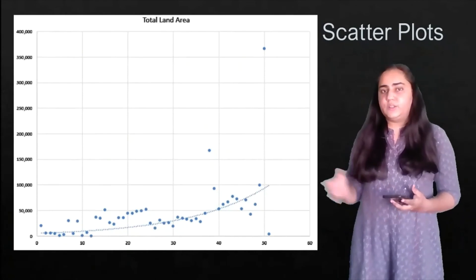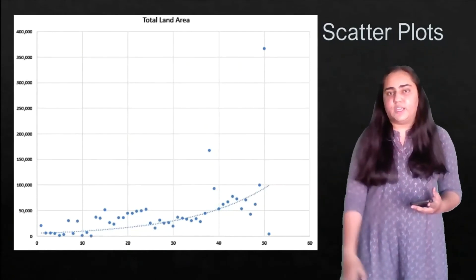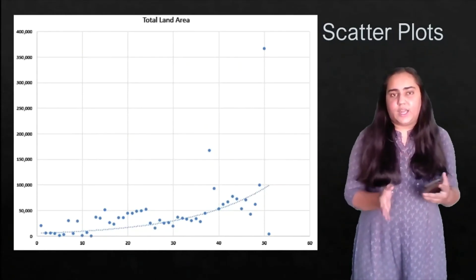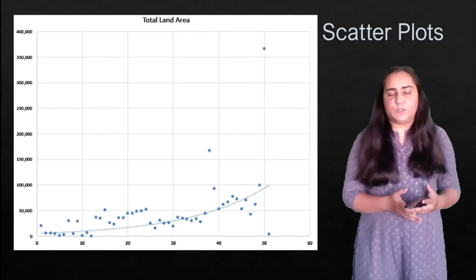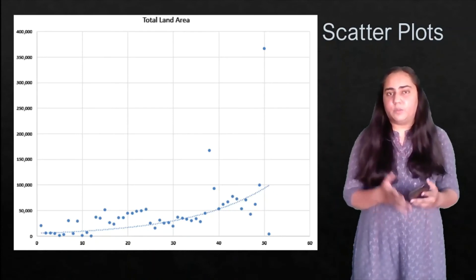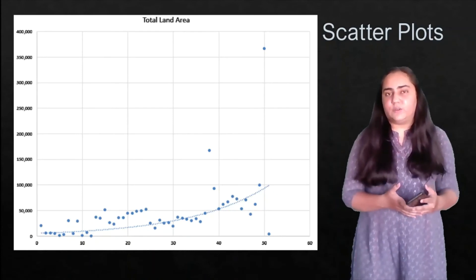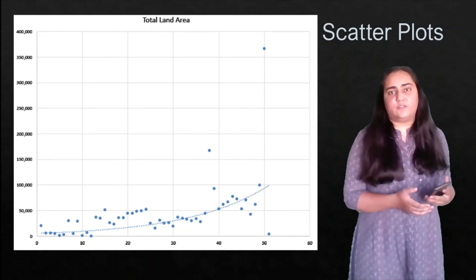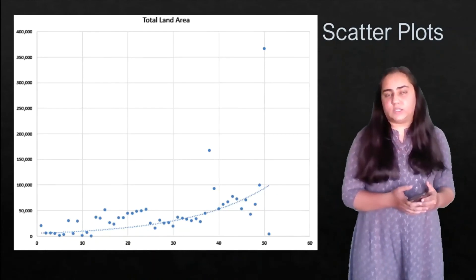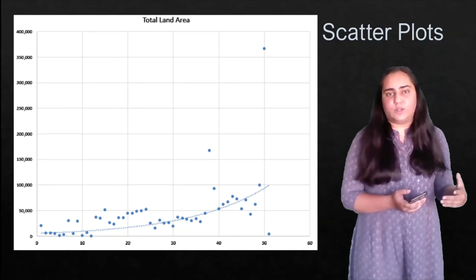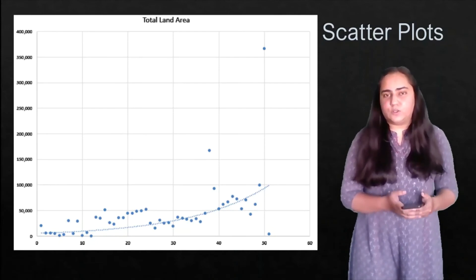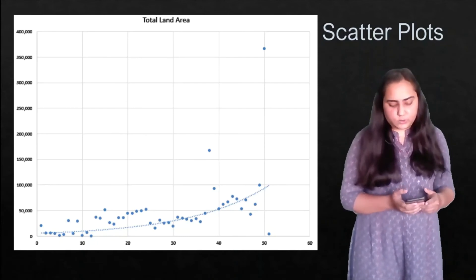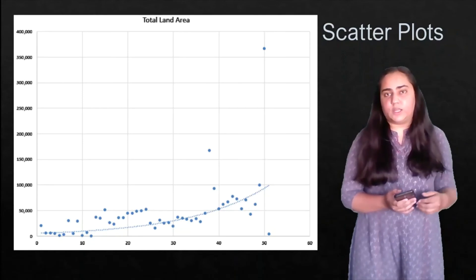Here is an example of a scatter plot. You can see those tiny dots — they are simply X and Y positions marked based on the data points in the data set. You can zoom in and take a closer look if you'd like.